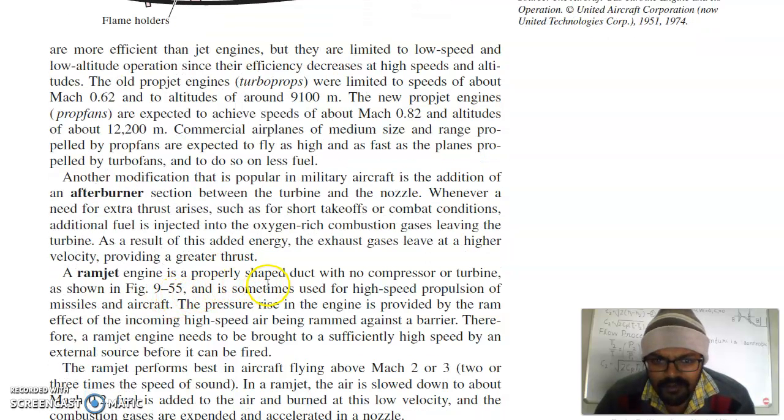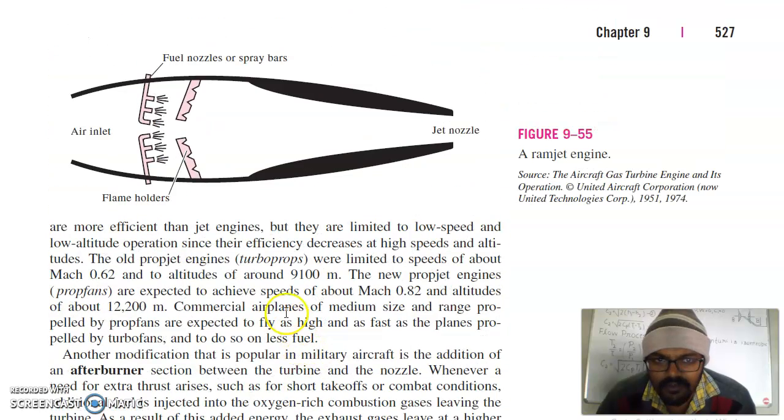Ramjet. Ramjet engine is a properly shaped duct with no compressor or turbine as shown in figure 9-55 and it is sometimes used for high speed propulsion of missiles and aircraft. The pressure rise in engine is provided by the ram effect of incoming high speed air being rammed against a barrier. Therefore, a ramjet engine needs to be brought to a sufficiently high speed by an external source before it can be fired. This is ramjet engine here. There is no moving part here, neither compressor nor turbine. Air will come due to the ram effect and it will raise to higher pressure. This is your fuel nozzles and this is your flame holders and then it will pass through these nozzles. This is a typical example of ramjet.